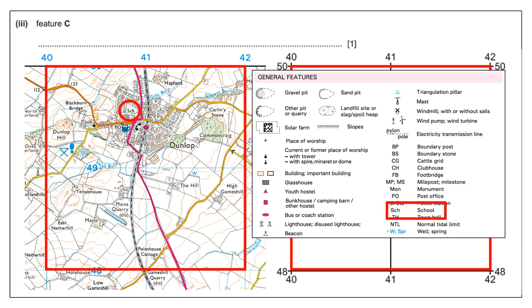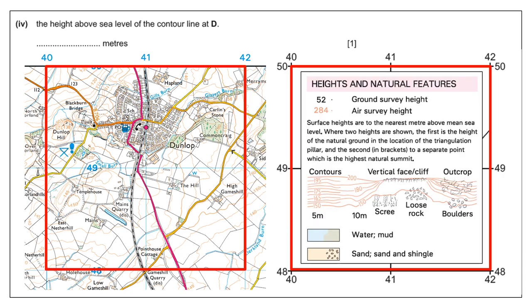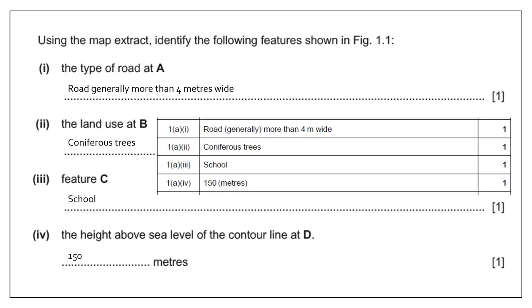Remember that the keys are sequential — so if you take where it says wind pump and wind turbine, the smaller wind pump is on the left and the wind turbine is on the right; they are sequential. For the height above sea level on the contour line at D, tracing through to the contour lines, we can see that's 150 meters. Write the answers in carefully, checking all of the area and symbols, focusing on what the question asks: type of road, land use, feature, and height above sea level.